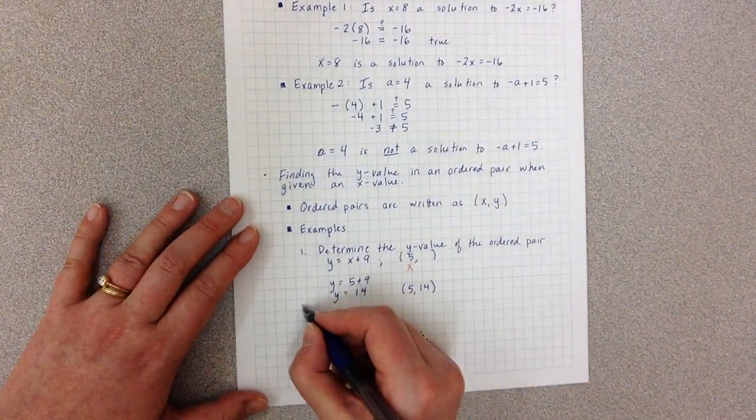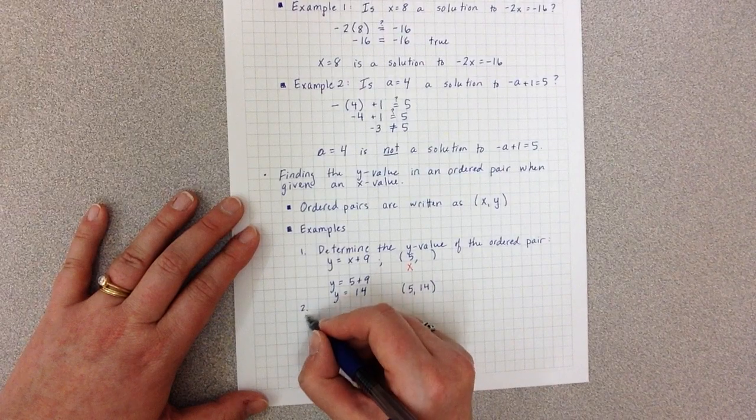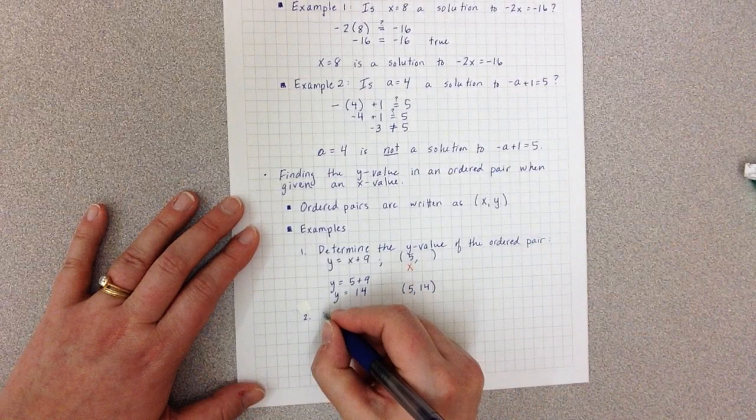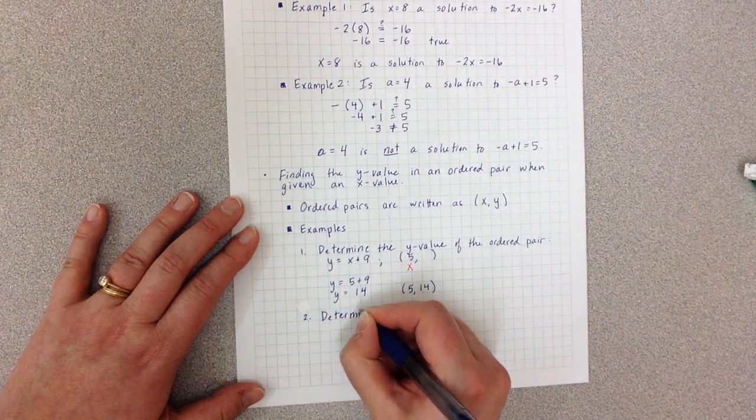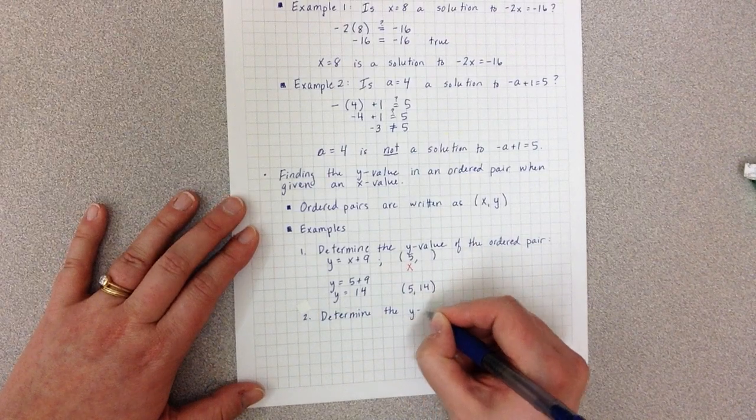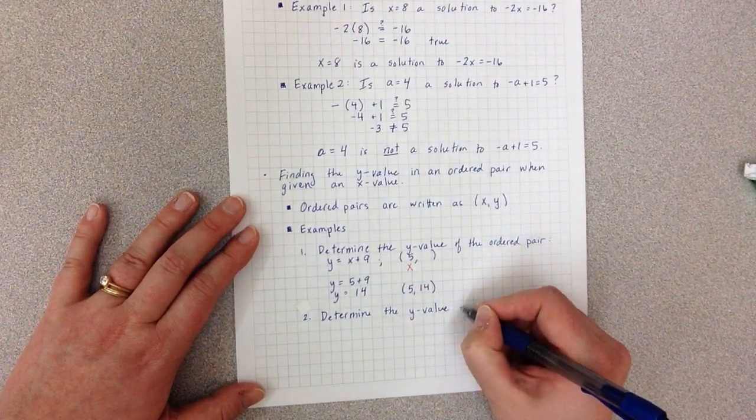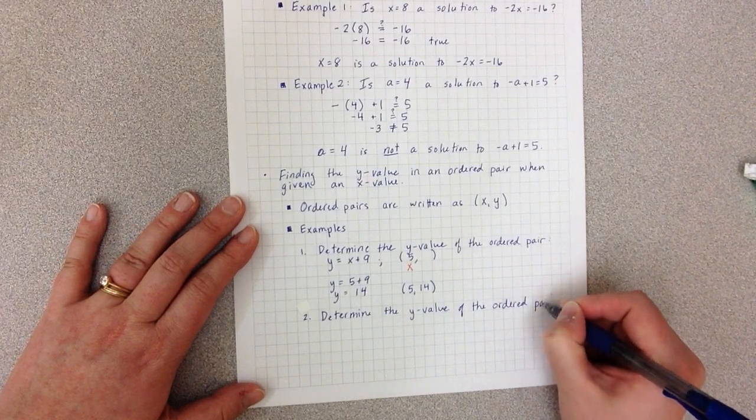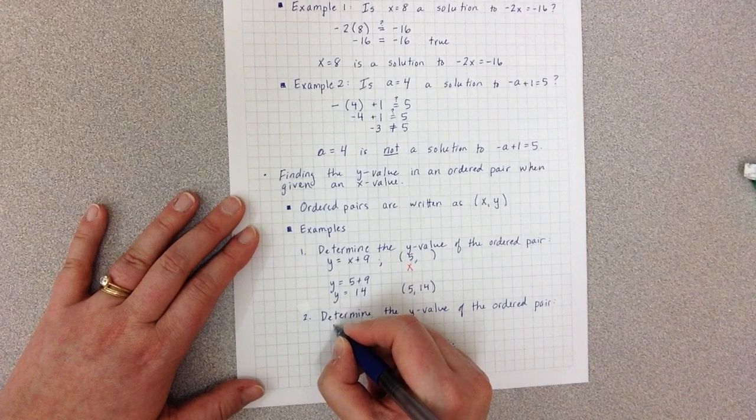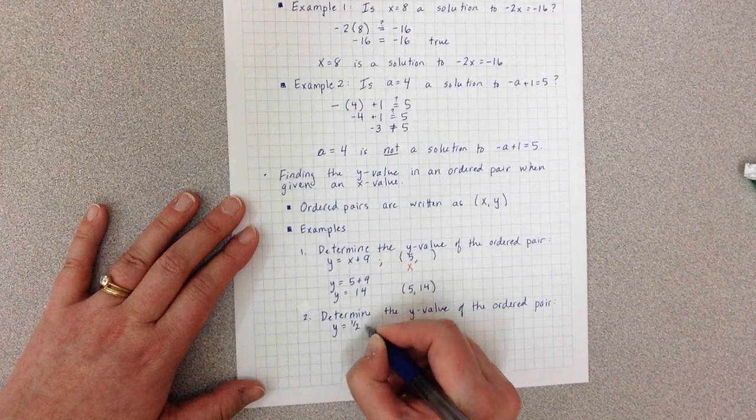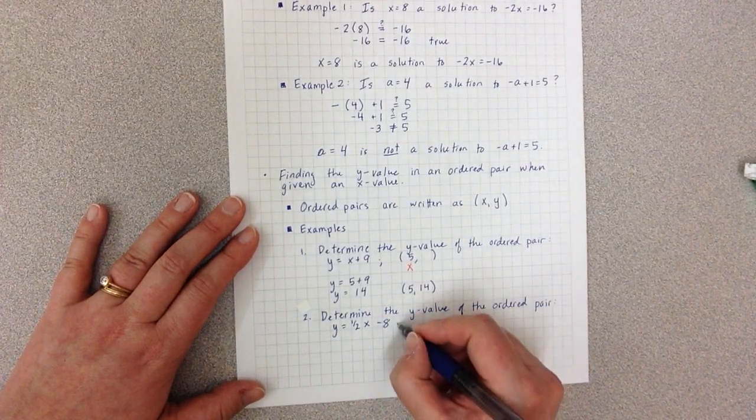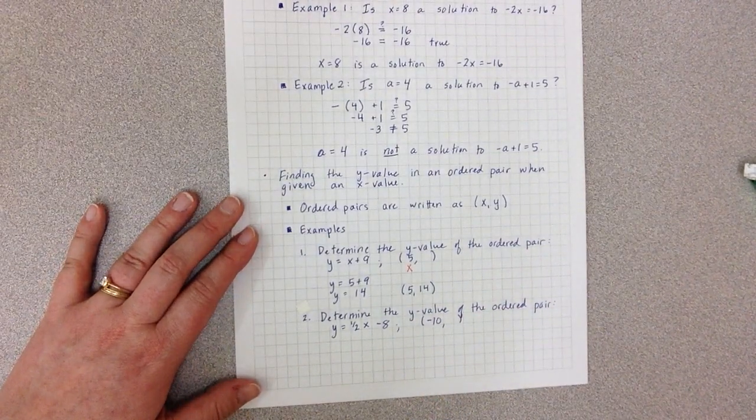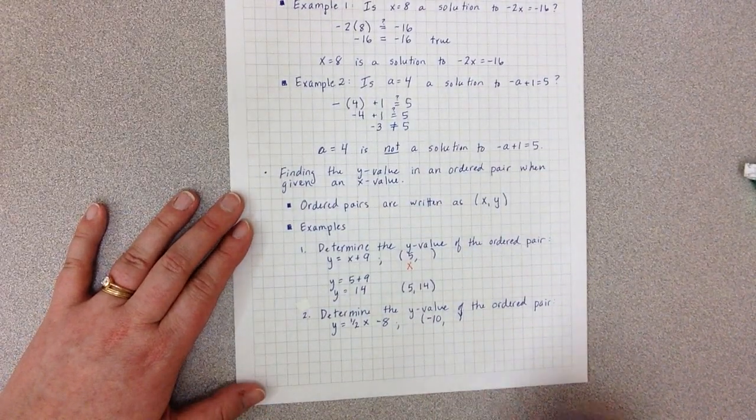Example 2. Determine the y value of the ordered pair for the equation y equals 1 half x minus 8, and the point negative 10, comma, the y value. So again, they give me an x value.